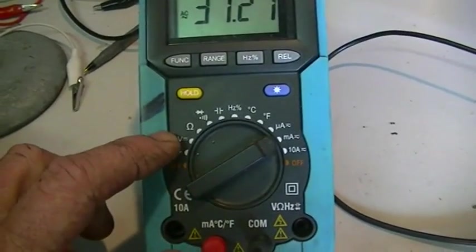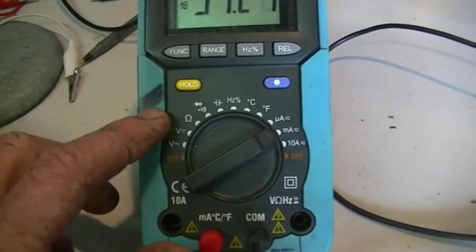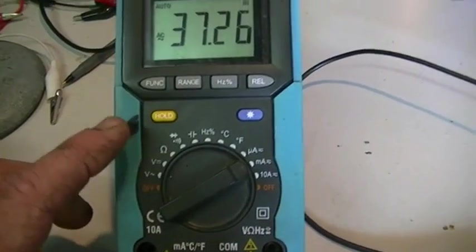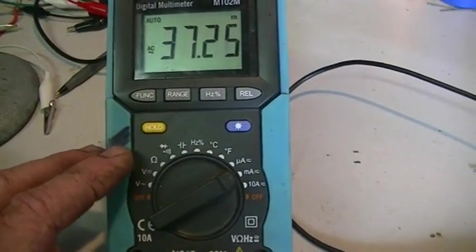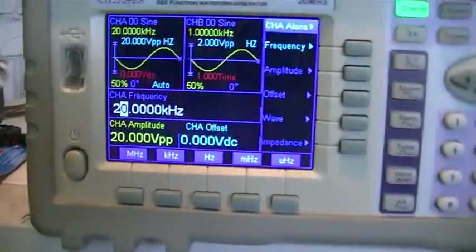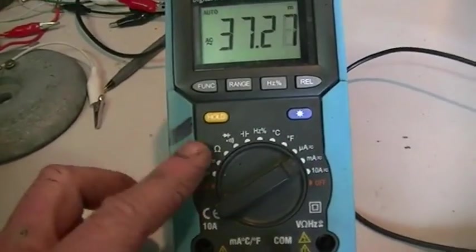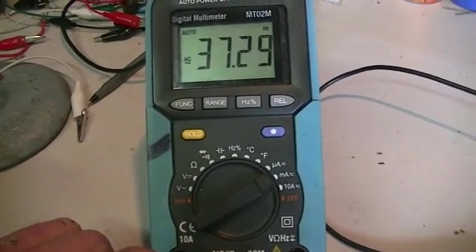And the accuracy is plus minus 5% up to 10 kilohertz, and we're running at 20 kilohertz. So even at 20 kilohertz, the old digital multimeter's not doing too bad at all.